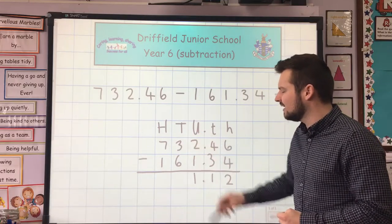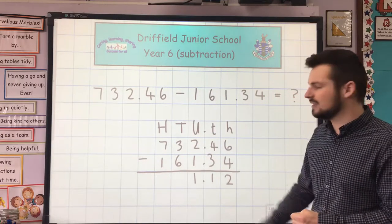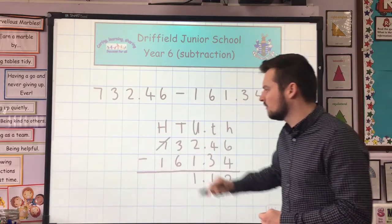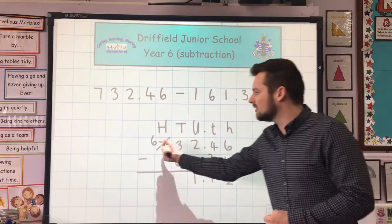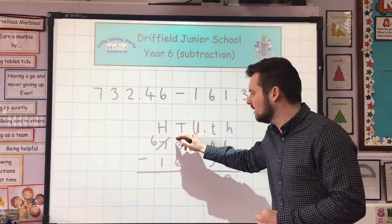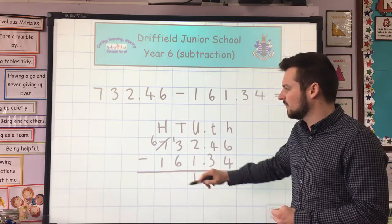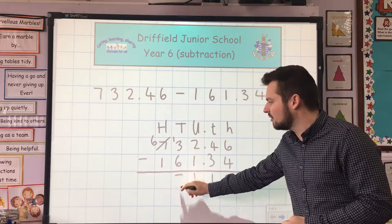Three-tens, take away six-tens — well, I can't do that, so what I'm going to have to do is carry from the column at the left-hand side of the hundreds. So here I've got seven hundreds. I'm going to borrow one of those hundreds, so that will become six hundreds. I'm going to take the one-hundred from here and carry it over here, so that I've now got thirteen-tens. Thirteen-tens take away six-tens are seven-tens.